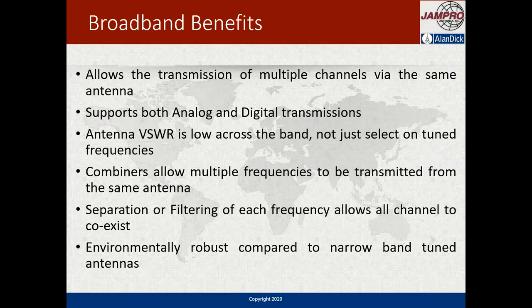The main thing that's good with a broadband antenna is it allows the transmission of multiple channels via the same antenna. So instead of having single channels in a system where you'd have to have multiple antennas and transmission lines, you can use one antenna that has enough bandwidth to transmit all of the frequencies that you require. It's still typically in-band — so for radio or TV, UHF, VHF, FM — but it means that you don't need multiple towers or multiple antennas.